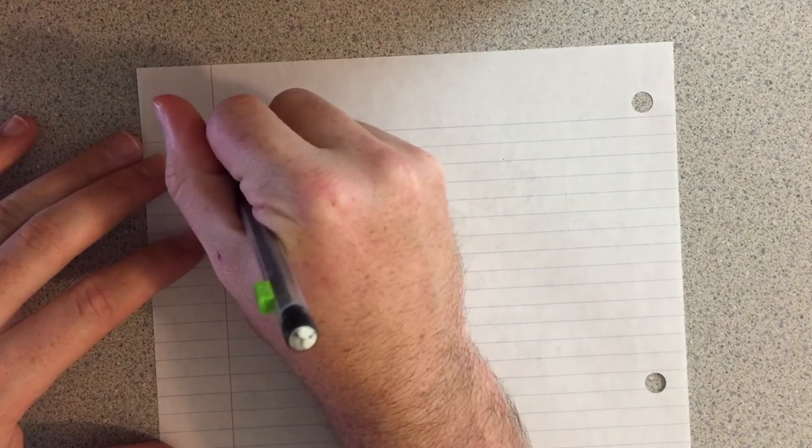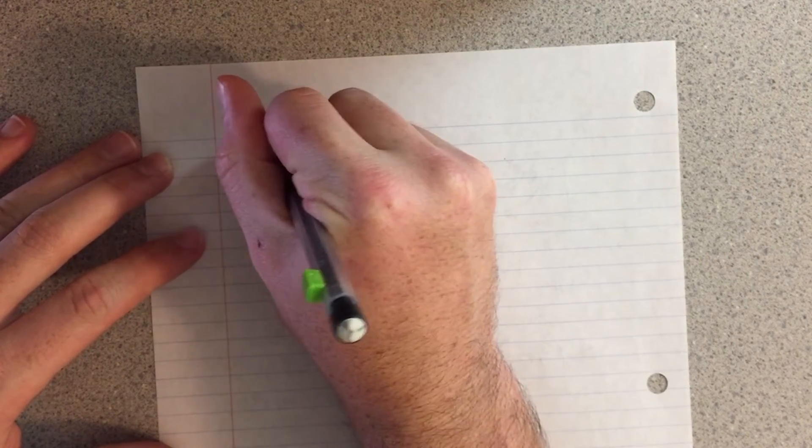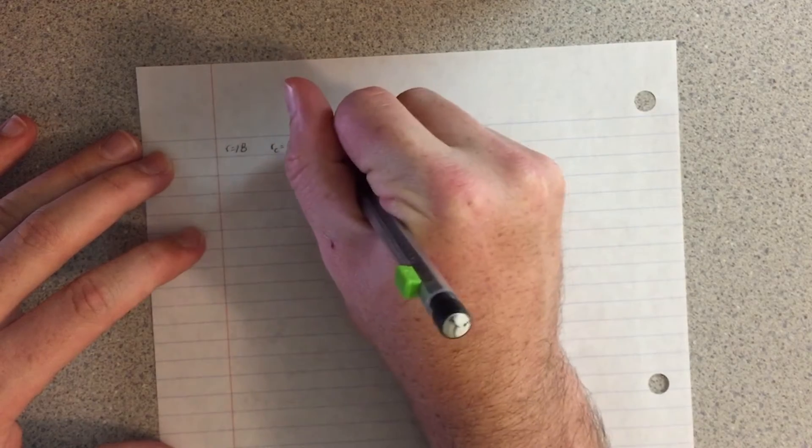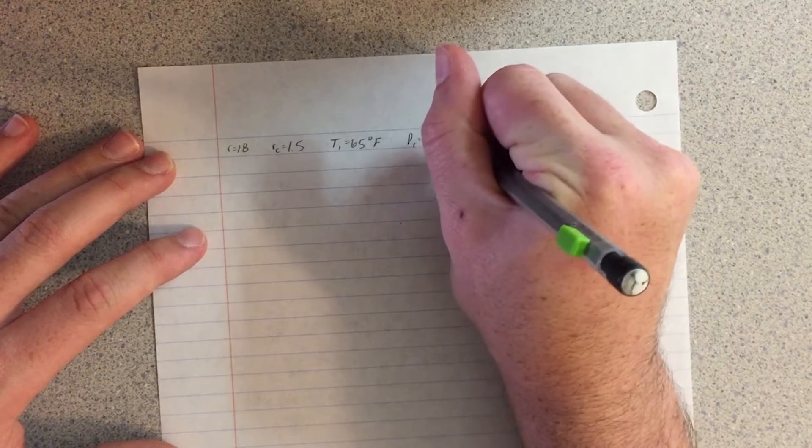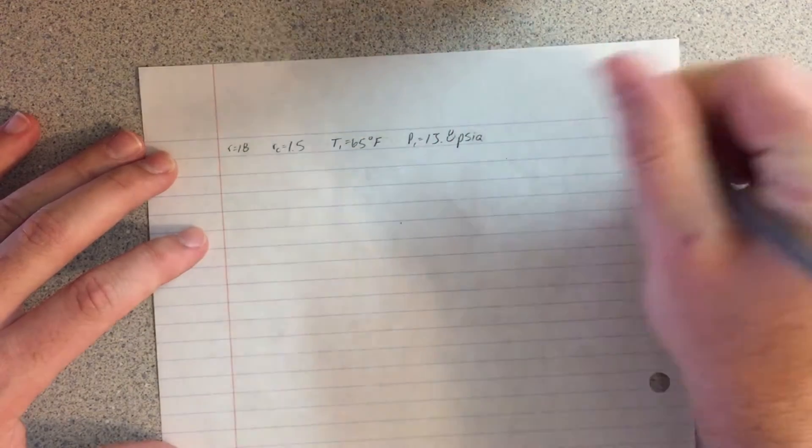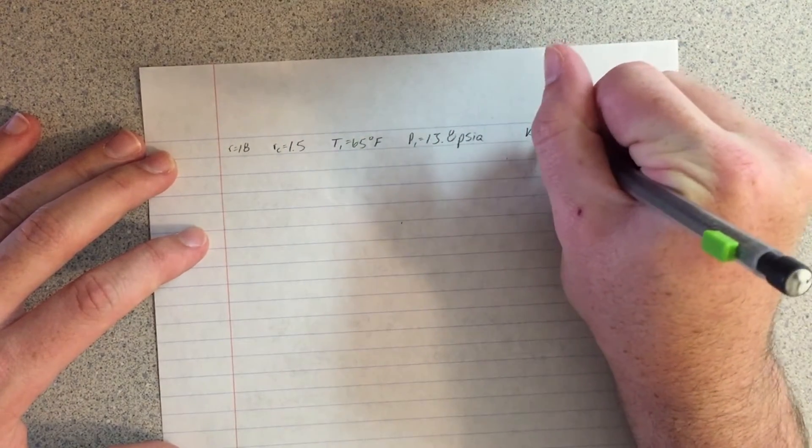The first step in solving this problem is to write out the known values of compression ratio R, cutoff ratio RC, temperature at point 1 T1, pressure at point 1 P1, and the ratio of specific heats, K.